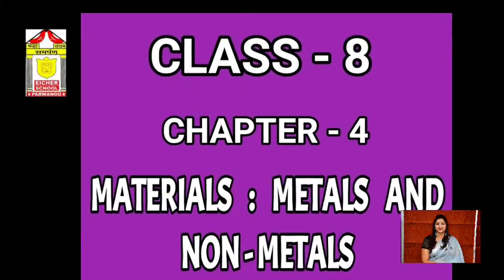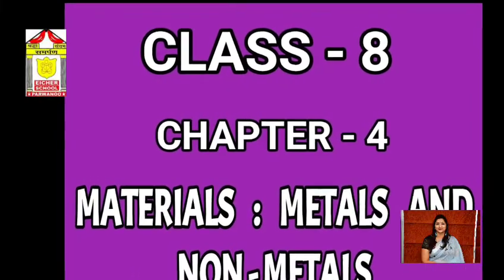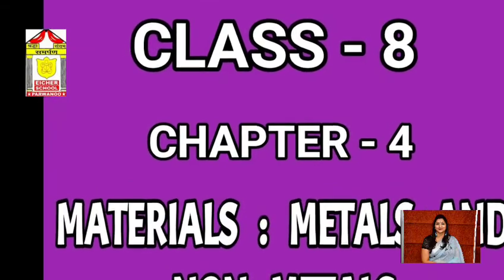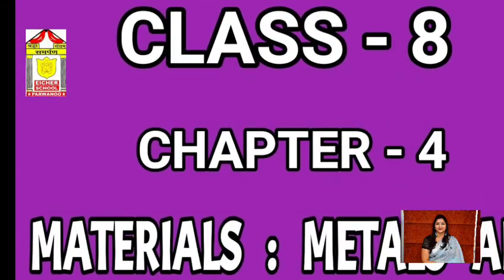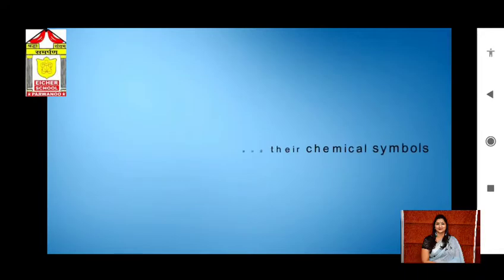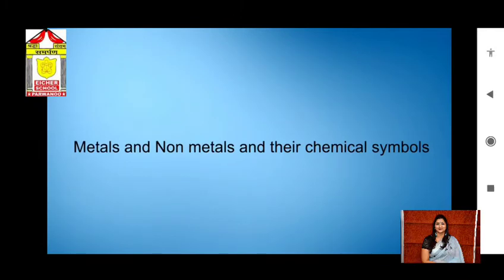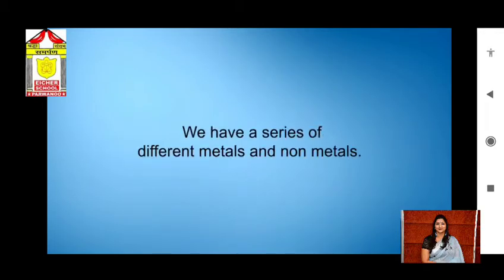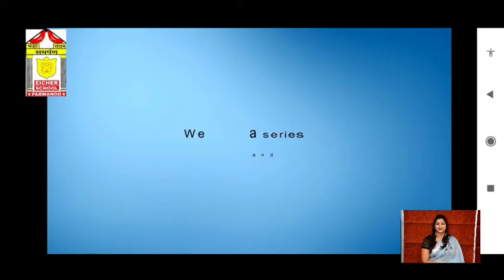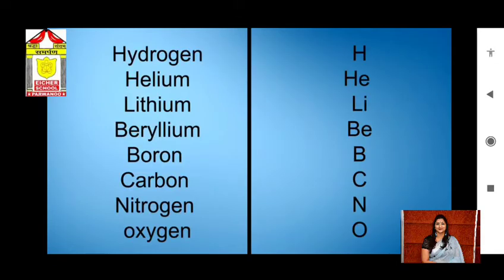Hello everyone. Chapter 4: Materials, Metals and Nonmetals. In part 1 of this video I explained the physical properties of metals and nonmetals. Now let us explain this chapter further. We have a series of different metals and nonmetals, so let us study their chemical symbols and chemical properties.